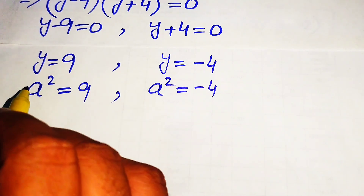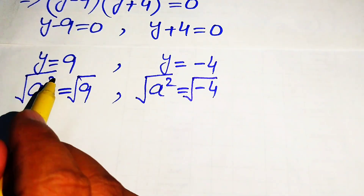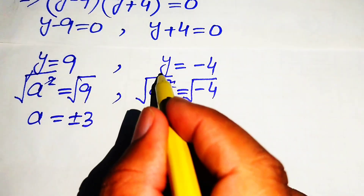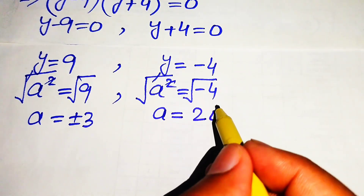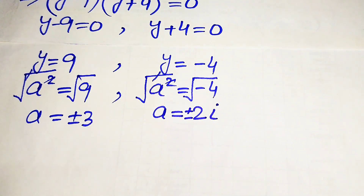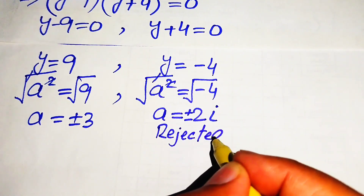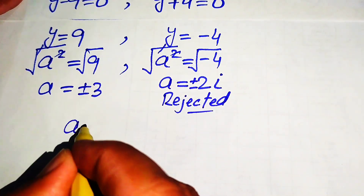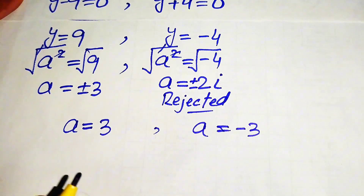Taking square roots: from a² = 9 we get a = ±3. From a² = -4 we get a = ±2i, since the square root of -1 is i. Since we need only real roots, we reject the complex solution and keep only a = ±3.